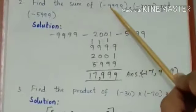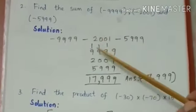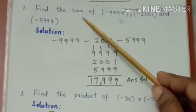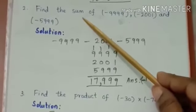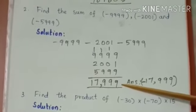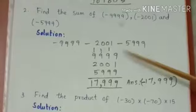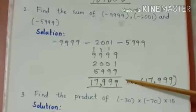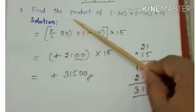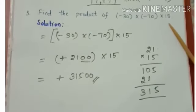Find the sum of these three values: the word 'sum' represents addition. All values carry a negative sign, so we add them and place the negative sign along with the answer.